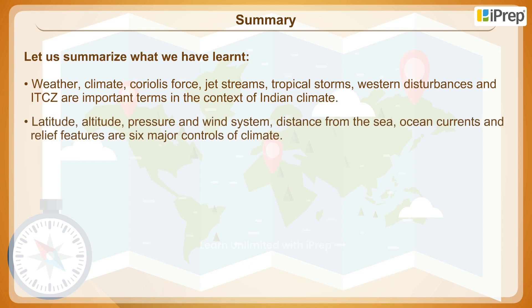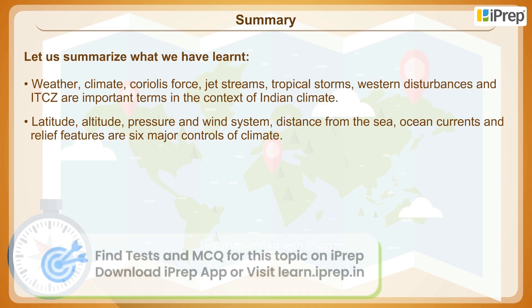Latitude, altitude, pressure and wind system, distance from the sea, ocean currents and relief features are the six major controls of climate.